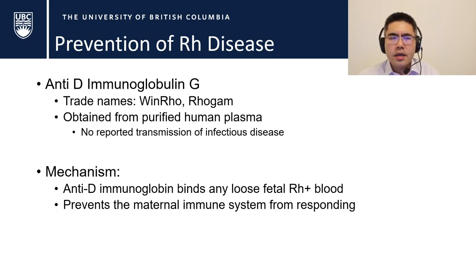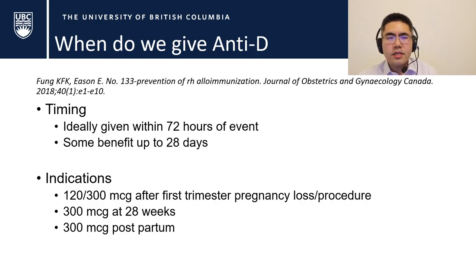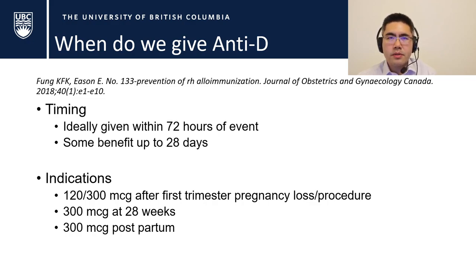How do we prevent Rh disease? This is where anti-D immunoglobulin comes into play. In Canada you'll typically see WinRho, because it's made in Winnipeg. It's obtained from purified human plasma, and there have been no reported transmissions of infectious disease with this injection despite thousands of women receiving it. The mechanism is that we provide anti-D immunoglobulin, which floats around and binds any loose fetal red blood cells carrying the Rh antigen in the maternal circulation, grabbing them so the maternal immune system cannot see them and will not develop antibodies. We give this within 72 hours of any sensitizing event, with some benefit up to 28 days — after every first-trimester loss or invasive diagnostic procedure, and also 300 micrograms at 28 weeks and 300 micrograms postpartum. Some jurisdictions give a slightly lower dose before 12 weeks due to less fetal blood, but practically in BC we give everyone 300 micrograms.